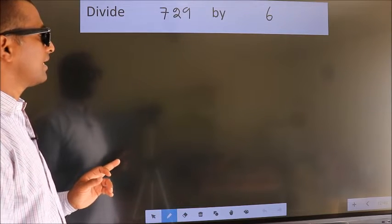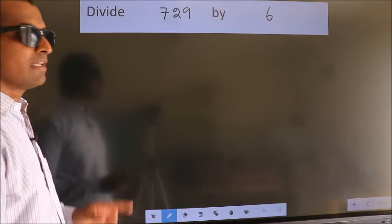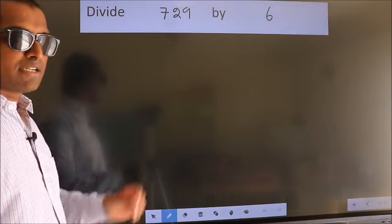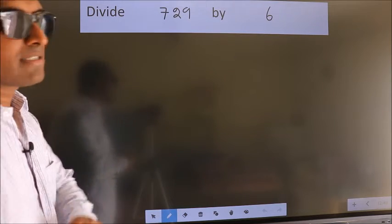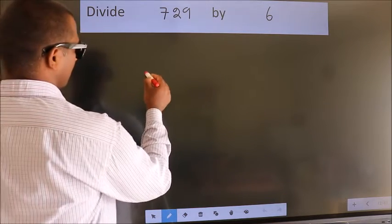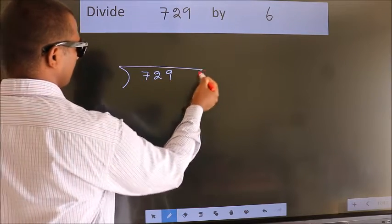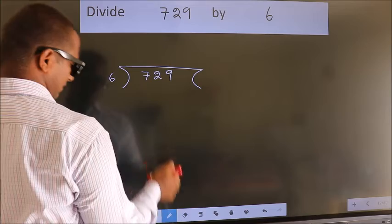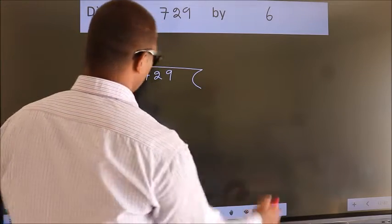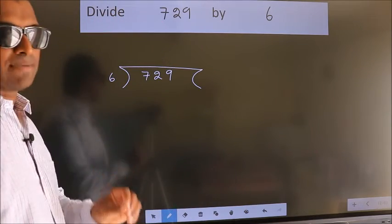Divide 729 by 6. To do this division, we should frame it in this way: 729 here, 6 here. This is your step 1.